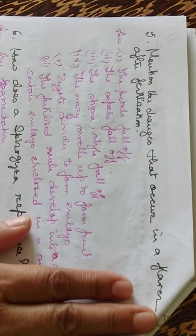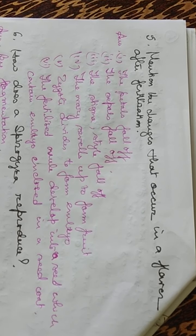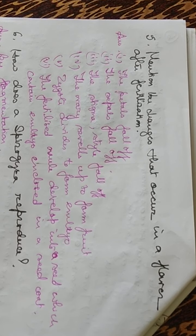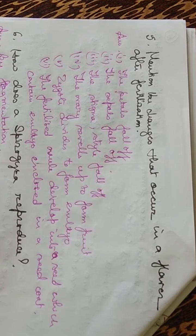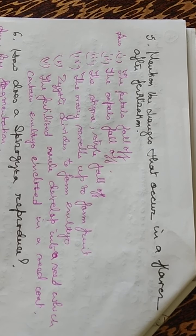What are the changes that occur in a flower after fertilization? After fertilization, the vegetative parts such as petals, sepals, and reproductive parts no longer needed like the stigma and style all fall off. The ovary swells up to form the fruit. The zygote divides to form the embryo, and the fertilized ovule develops into a seed which contains the embryo enclosed in a seed coat.